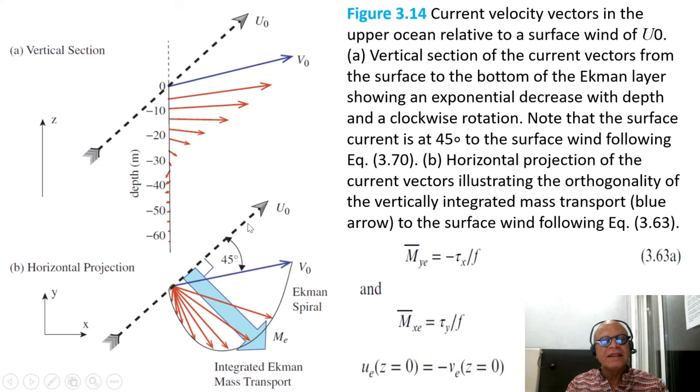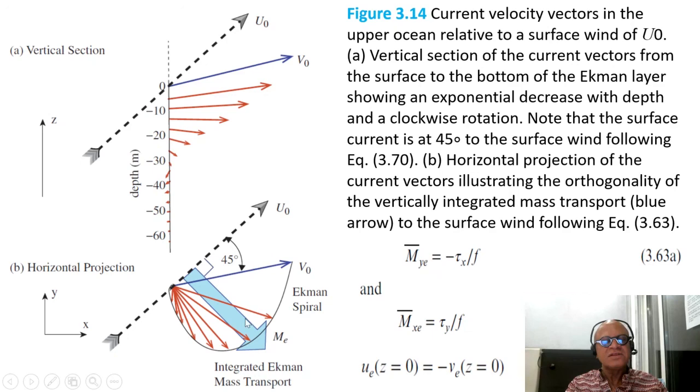Here, see, this is the transport M_E. So meridional and zonal with Ekman currents going to zero at the surface. So that's the story of the Ekman currents.